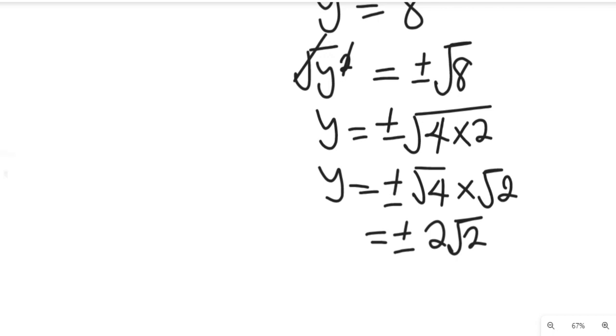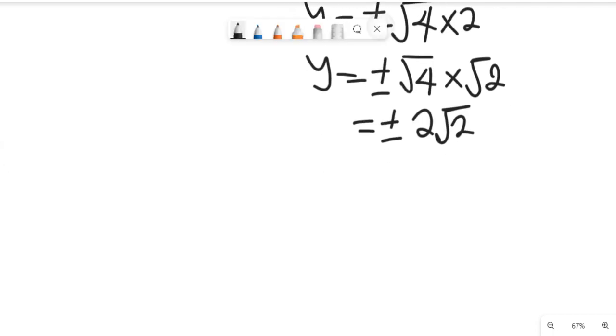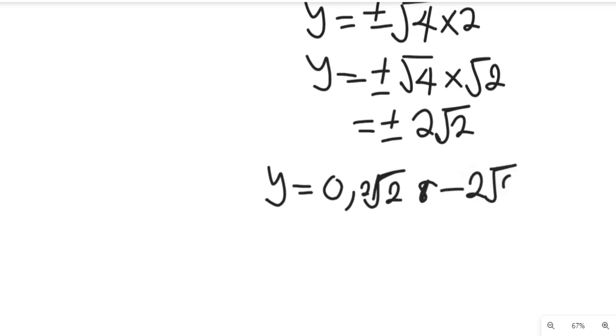So the solution to this equation, our y will be equal to 0, right? We'll have 2√2, which is positive 2√2, and we have negative 2√2. This is the solution to that equation.